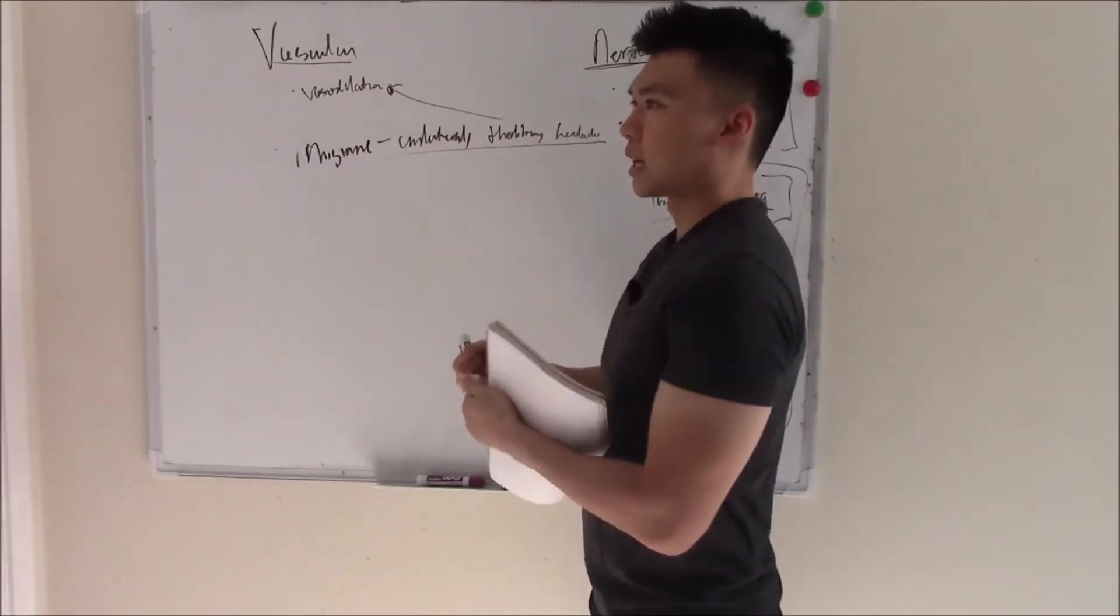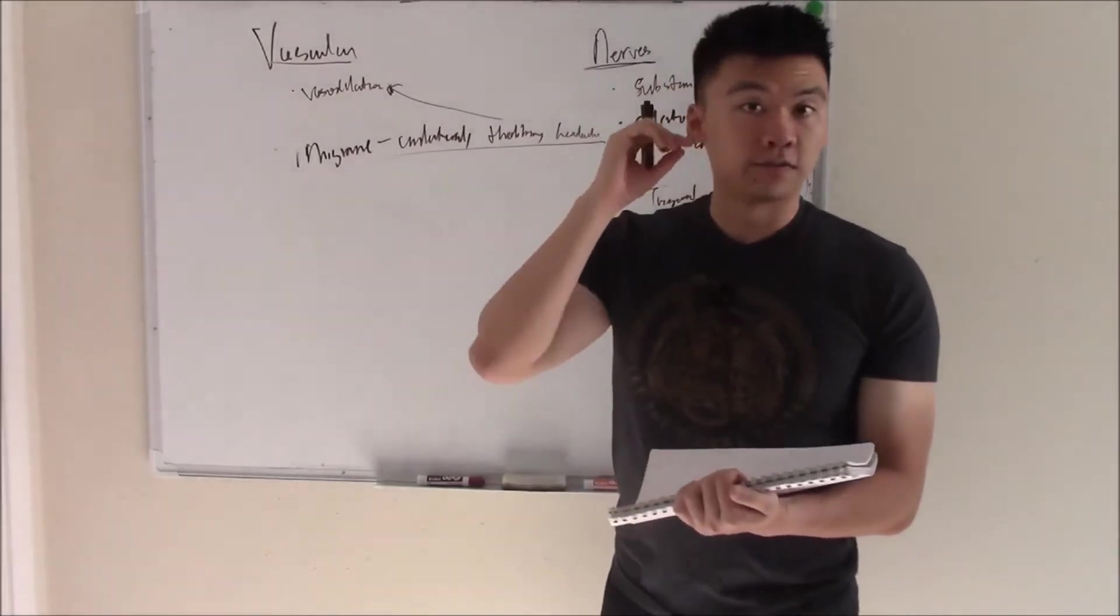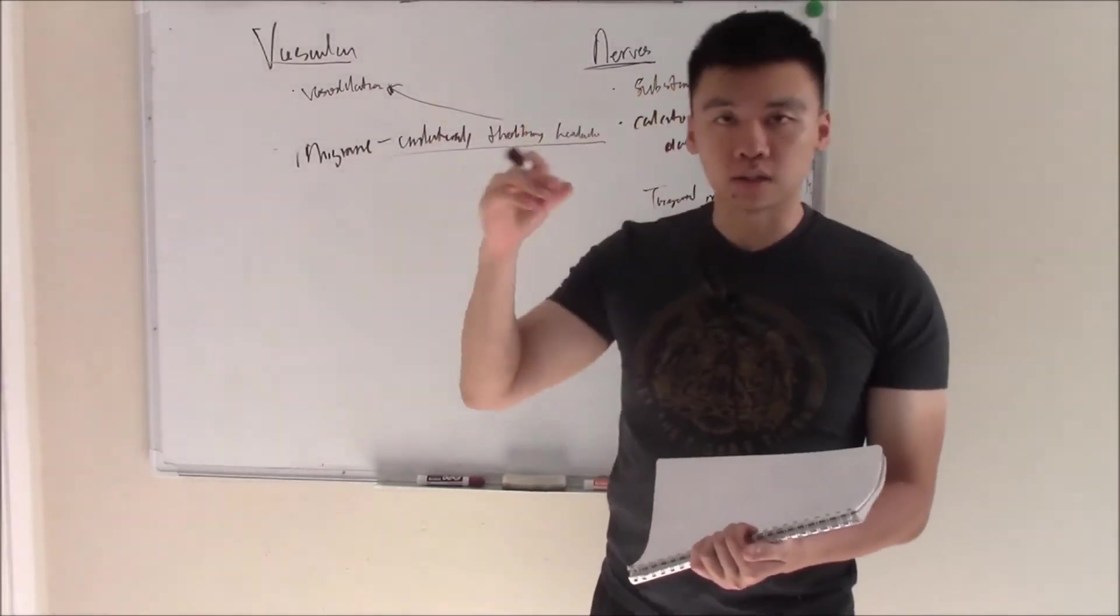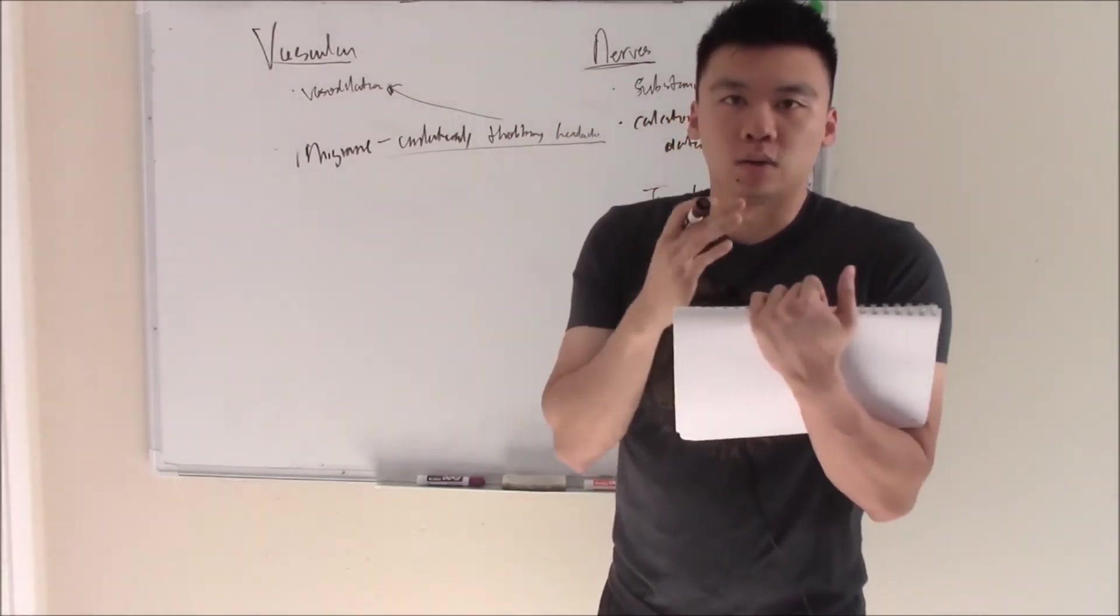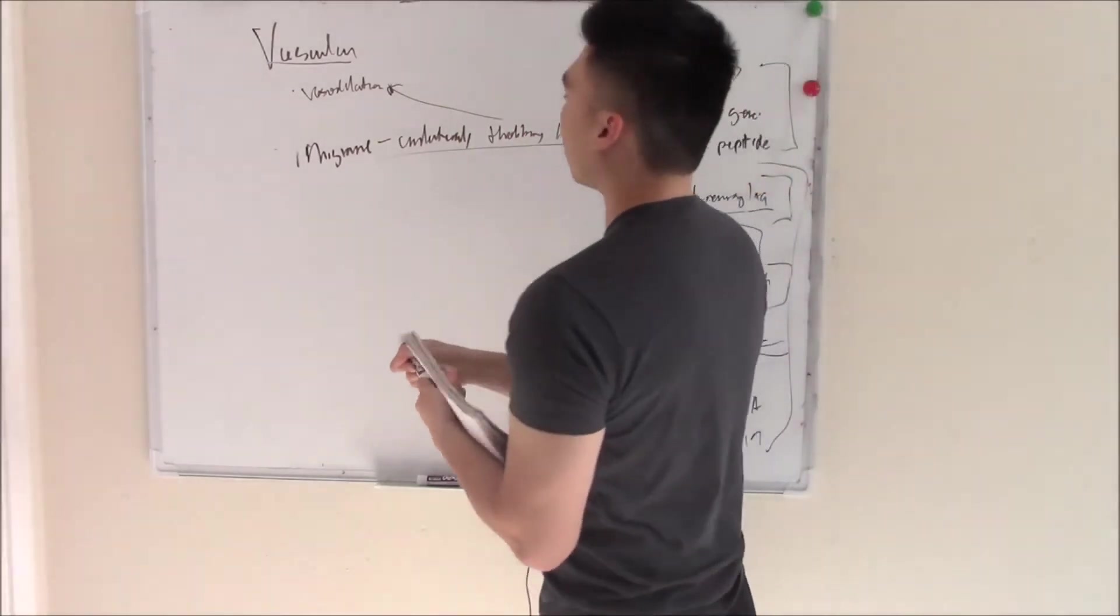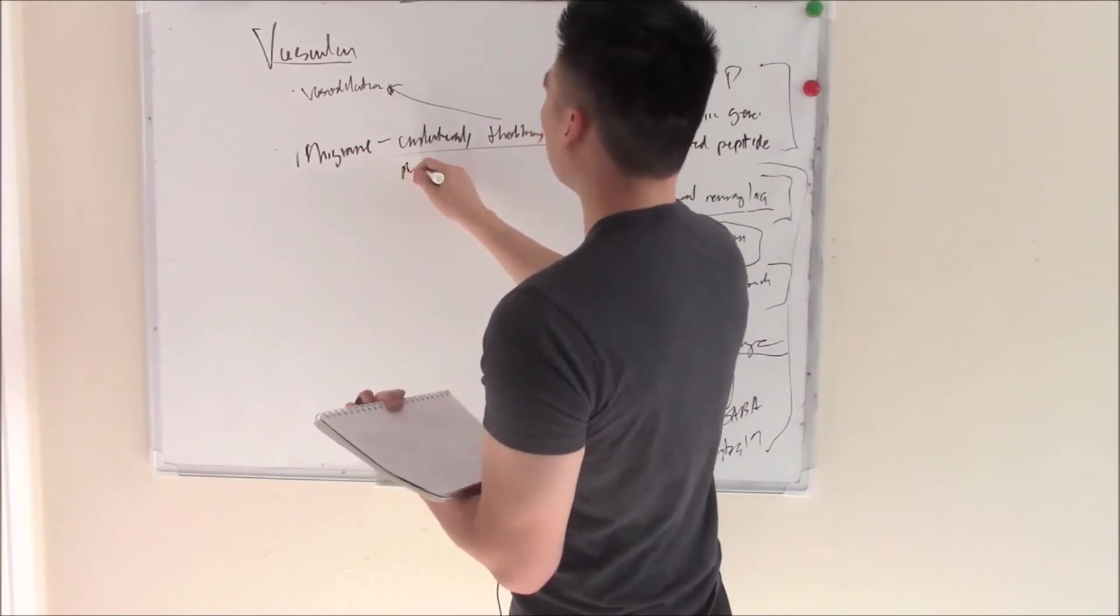Some of the classical signs are photophobia and phonophobia. So loud noises, bright lights make it worse, and they want to just go into a dark, quiet room and just stay there. So write photophobia and phonophobia.